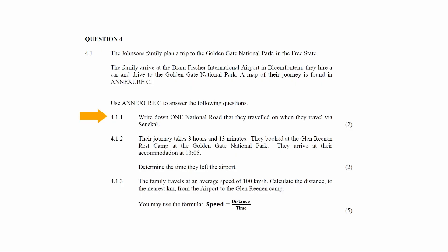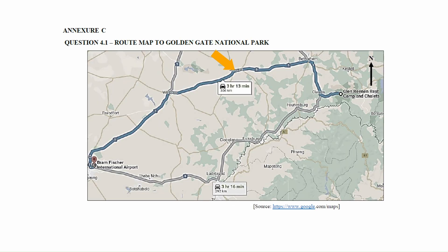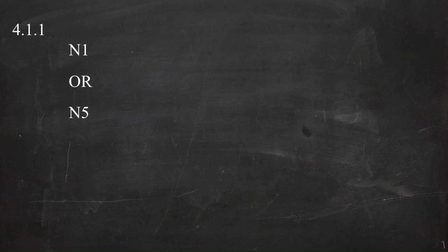In question 4.1.1, you are instructed to write down one national road that they traveled on when they traveled via Senekal. On the route map in Annexure C, there are two national roads that they traveled on when they traveled via Senekal: the N1 and N5. Either one of these roads is an acceptable answer.